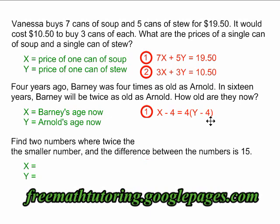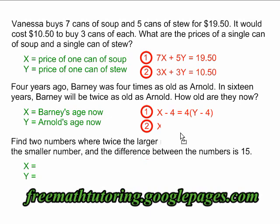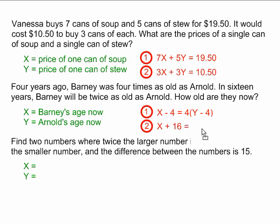The second sentence says in 16 years Barney will be twice as old as Arnold. This equation works the same way. In 16 years, Barney is represented with x plus 16. The 'will be' part of the sentence is the equal sign.